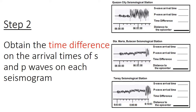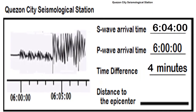Step number two is to obtain the time difference between the arrival times of S and P waves on each seismogram. From our previous activity, we were able to practice how the time difference is obtained, and it goes like this.